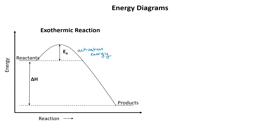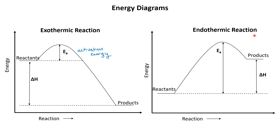Now let's take a look at an endothermic reaction. The axes are the same — on the x-axis, the reaction proceeds from reactants to products, and on the y-axis we have energy. In an endothermic reaction, products are higher in energy than reactants. The difference in energies is still our delta H. We still have activation energy here, but it is much larger for an endothermic reaction because the reactants have to get over a much larger hump to reach products.